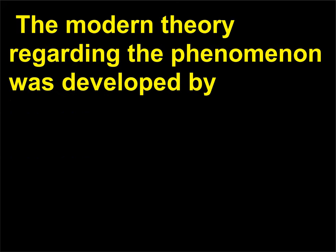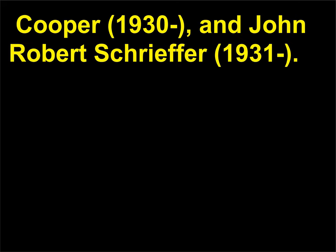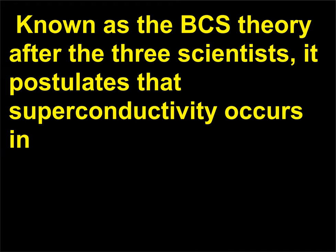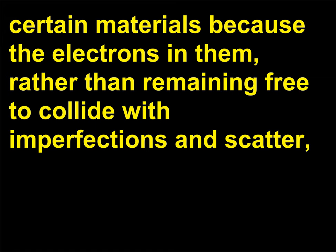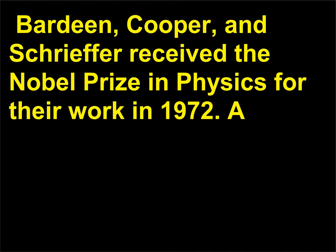The modern theory regarding the phenomenon was developed by three American physicists: John Bardeen (1908–1991), Leon N. Cooper (1930), and John Robert Schrieffer (1931). Known as the BCS theory after the three scientists, it postulates that superconductivity occurs in certain materials because the electrons in them, rather than remaining free to collide with imperfections and scatter, form pairs that can flow easily around imperfections and do not lose their energy. Bardeen, Cooper, and Schrieffer received the Nobel Prize in Physics for their work in 1972.